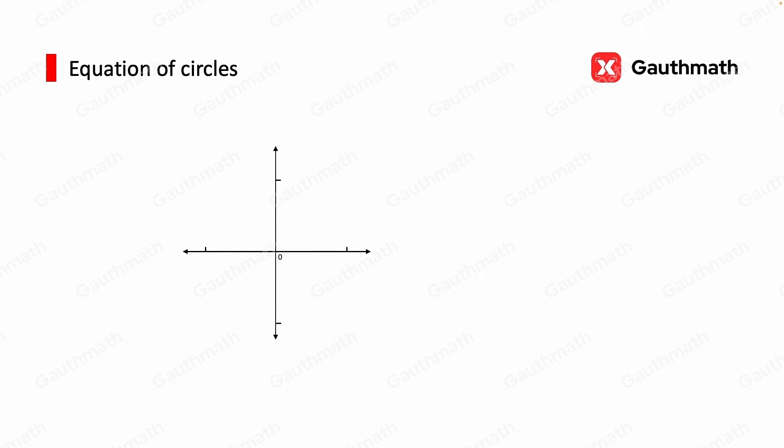A circle is a round plane figure whose boundary consists of points equidistant from the center. And the radius is the straight line from the center to a point on the circumference.